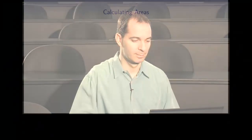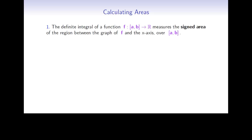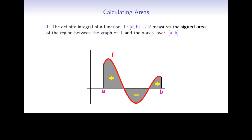But let's start with a quick review. Recall that the definite integral of a function f from a closed interval [a, b] measures the signed area of the region between the graph of f and the x-axis over the interval [a, b]. This means that regions above the x-axis are considered to be positive, and regions below the x-axis are considered negative.